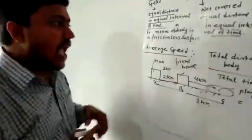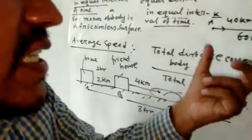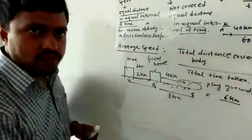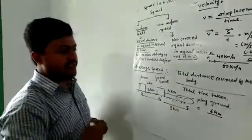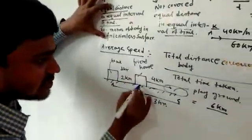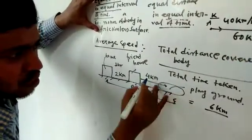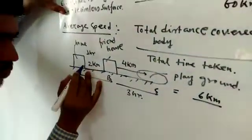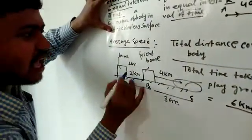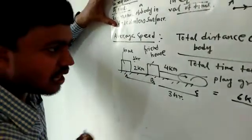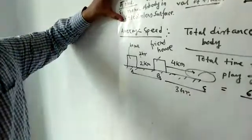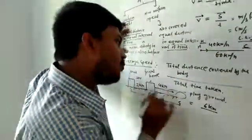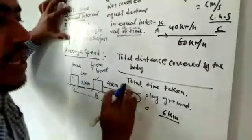Next is average speed. Average speed means the total distance covered by the body divided by the total time taken for the entire journey. For example, suppose this is your home and this is your friend's house, and the playground is 4 km from your friend's house, while the distance between your home and your friend's house is 2 km. You travel by bicycle: 2 km takes 1 hour and the next 4 km takes 3 hours.